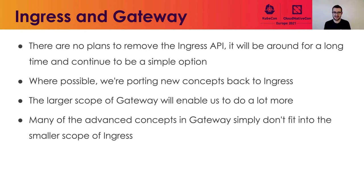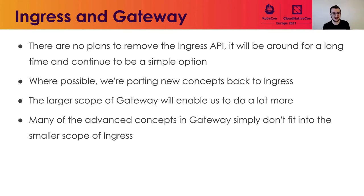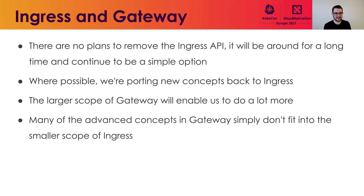We can't talk about this without talking about Ingress, because Ingress is really a lot of inspiration for this API. You may be wondering what's happening to the Ingress API — I know of no plans to deprecate or remove it anytime in the near future; I think it's going to be around for a very long time. Where possible, we're trying to port concepts back to Ingress. But a lot of the new functionality we're adding fits very naturally inside the Gateway API and doesn't really fit well inside the Ingress API. The intent is to keep the Ingress API very simple and straightforward, while the Gateway API will be the home of more advanced routing features.